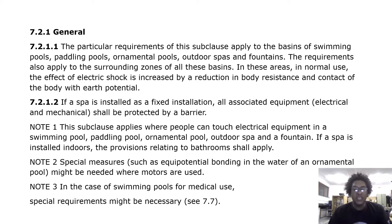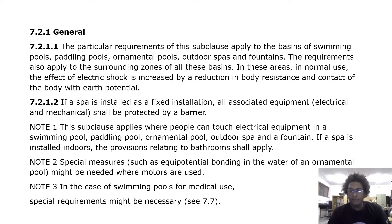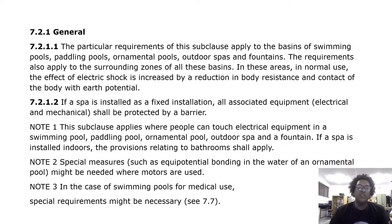If a spa is installed as a fixed installation, all associated equipment, electrical and mechanical, shall be protected by a barrier. Note 1: this sub-clause applies where people can touch electrical equipment in a swimming pool, paddling pool, ornamental pool, outdoor spa and fountain. If a spa is installed indoors, the provisions relating to bathrooms shall apply. Note 2: special measures such as equipotential bonding in the water of an ornamental pool might be needed where motors are used. Note 3: for swimming pools for medical use, special requirements might be necessary — see Section 7.7, medical installations.